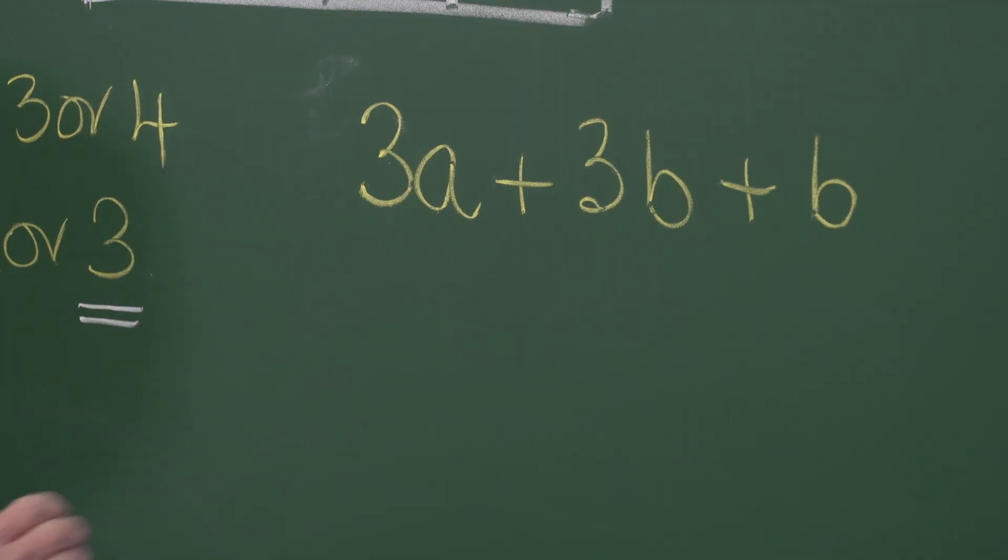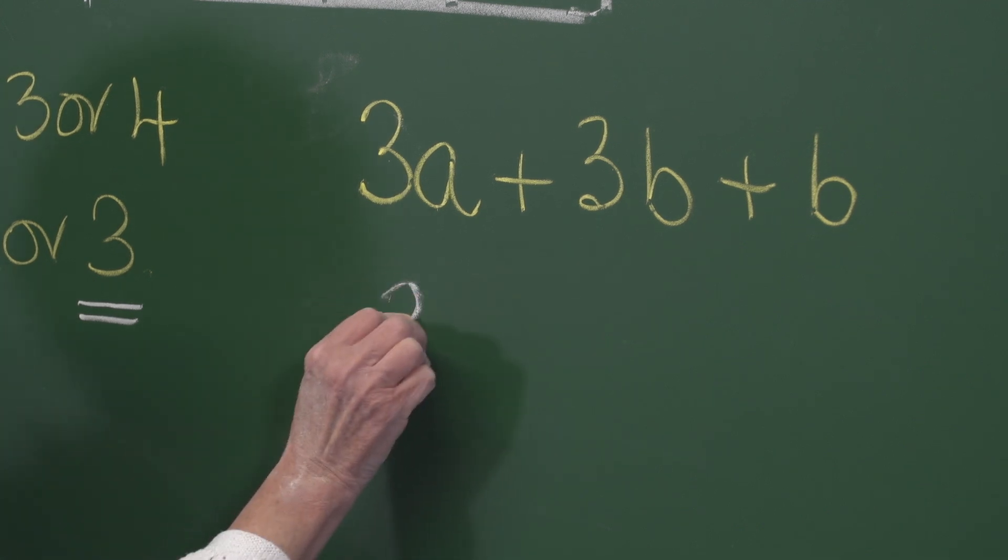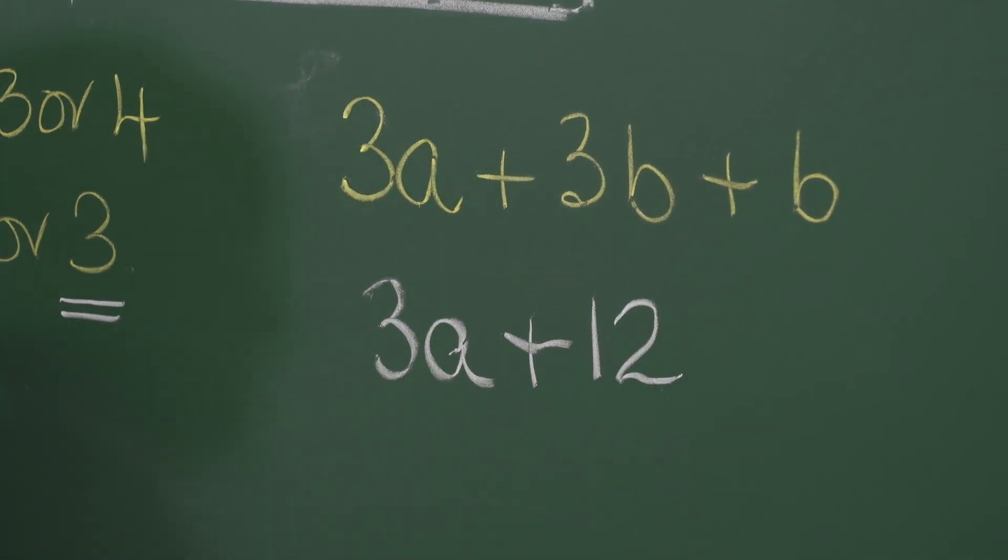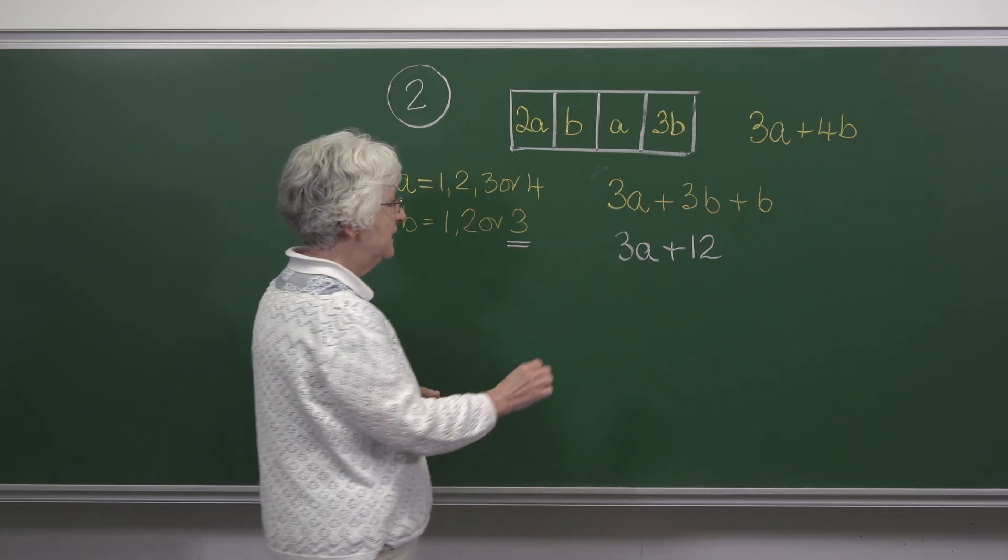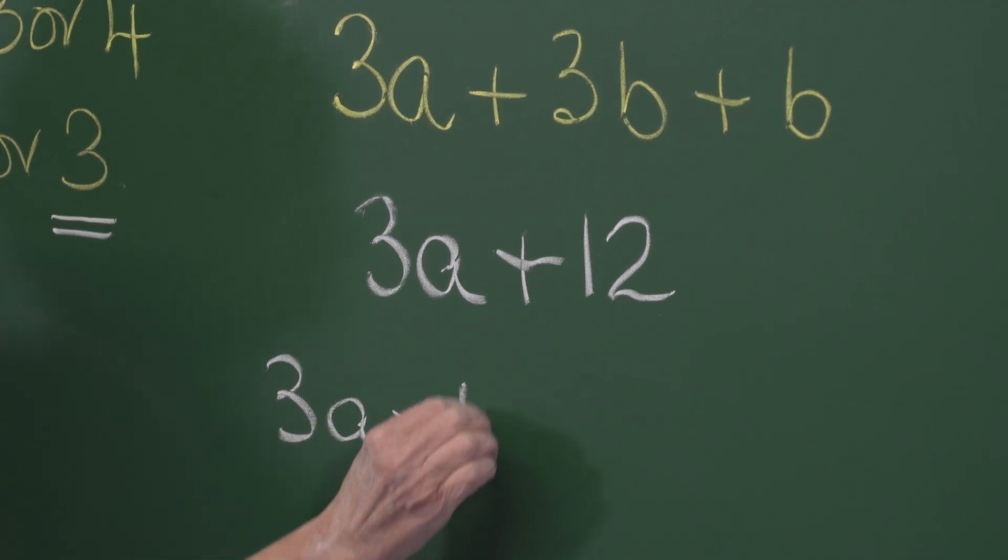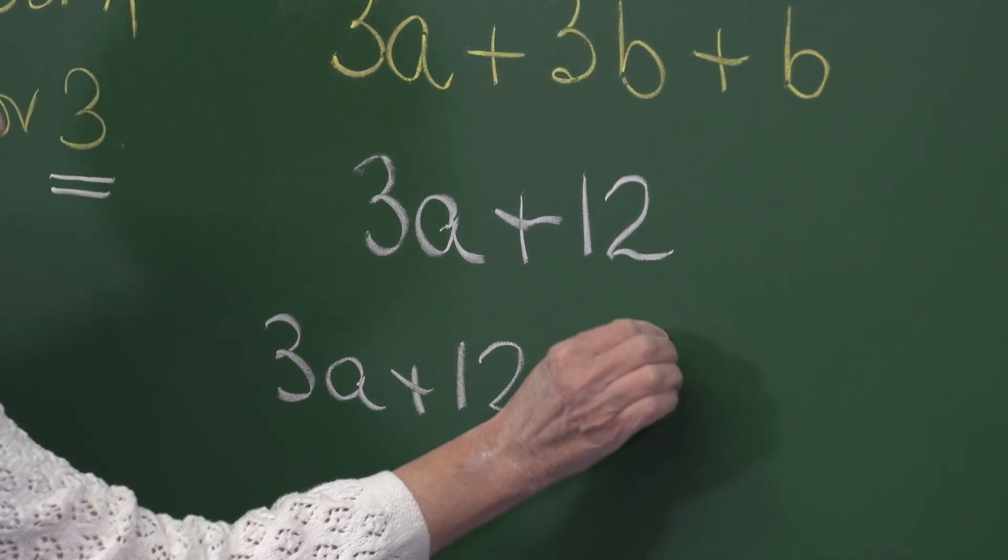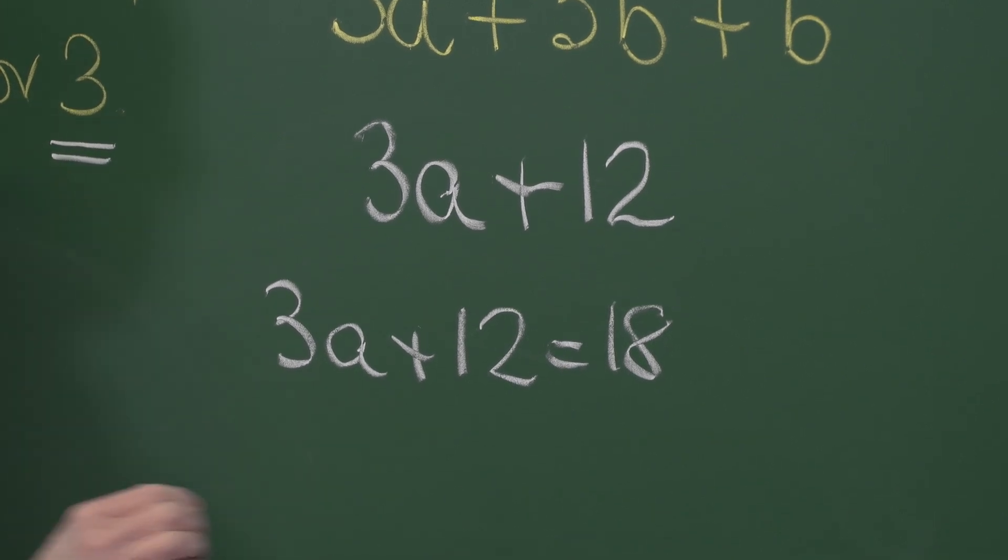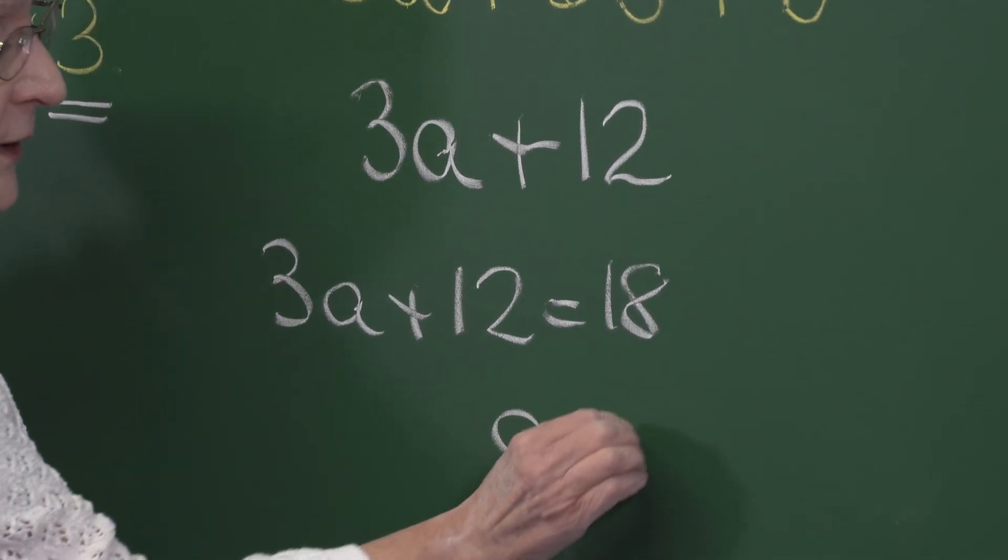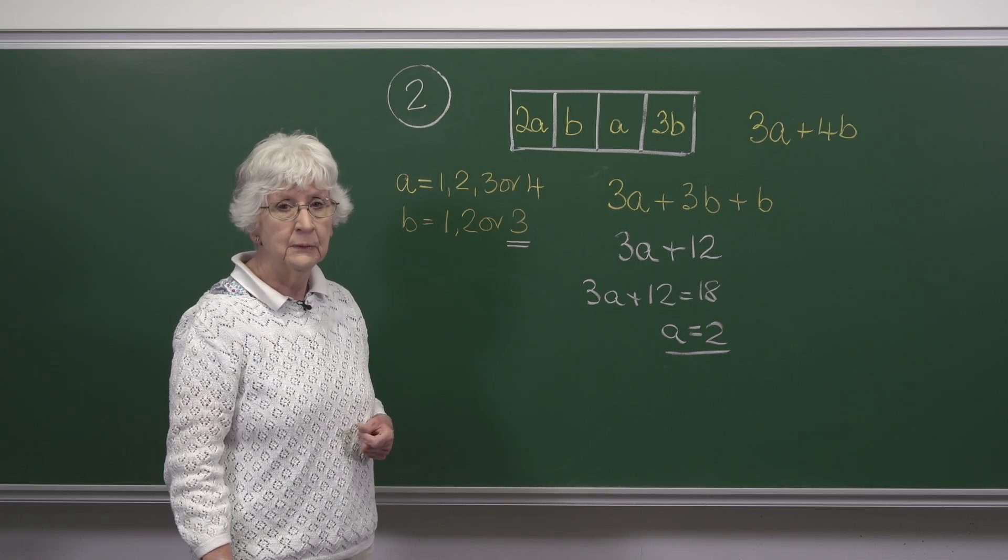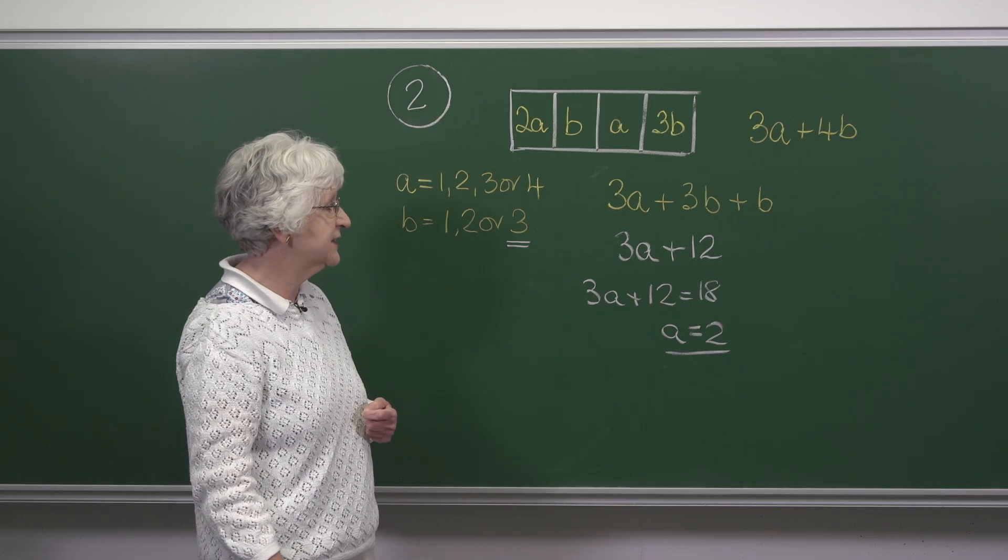So we know that 3a plus 12 is a multiple of 9 so it must be more than 9 so we consider 3a plus 12 equals 18 which gives me 3a is 6 and a is 2 which seems to be fine because that is a digit. But we've also got to check that there are no other answers.